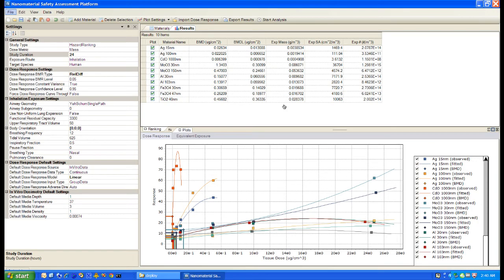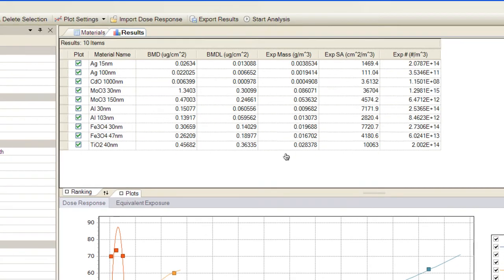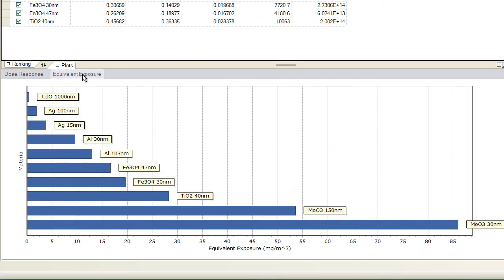At the conclusion of the analysis, the results window is displayed. The spreadsheet at the top half of the window contains the computed BMD equivalent exposure in mass, surface area, and particle number for each material in the materials list. In the bottom half of the window, the dose response plots for each of the materials in the list and the equivalent exposure chart are displayed.